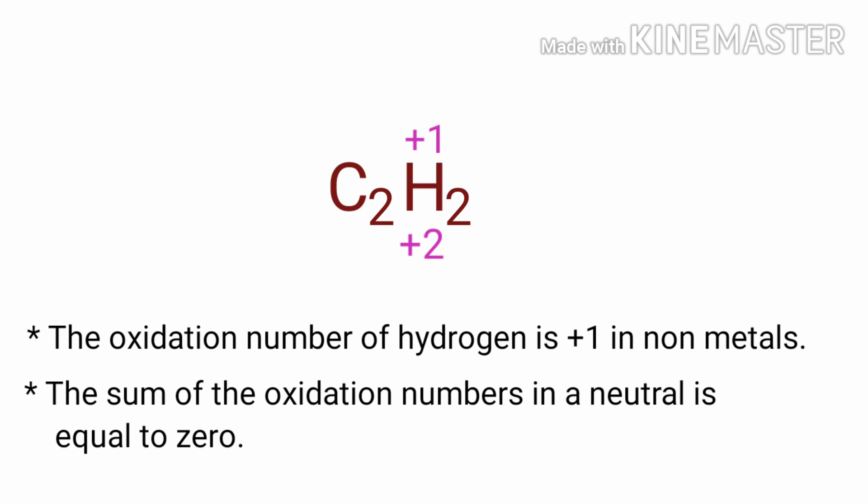So the number under C2 must be minus two. In the C2 element, there are two carbon atoms present, so we can write the oxidation number of the carbon is minus one.